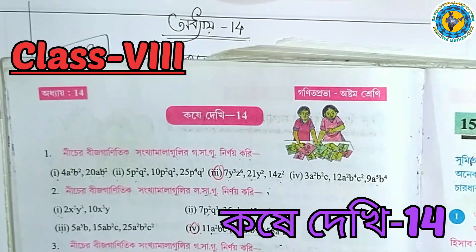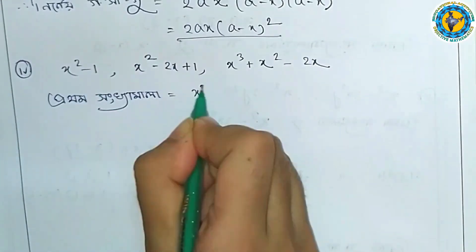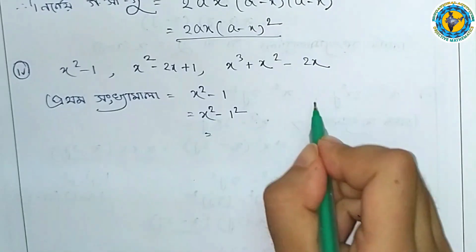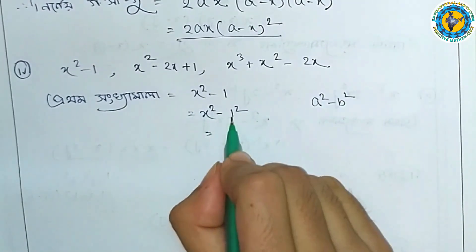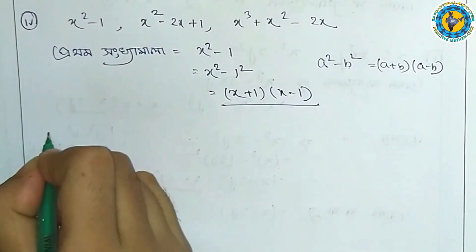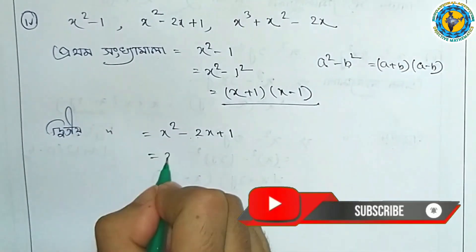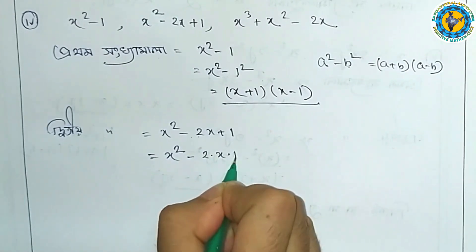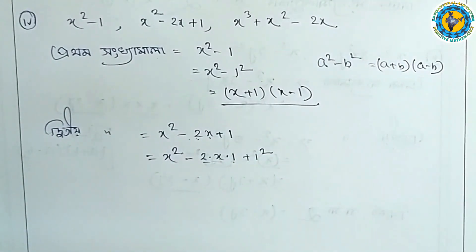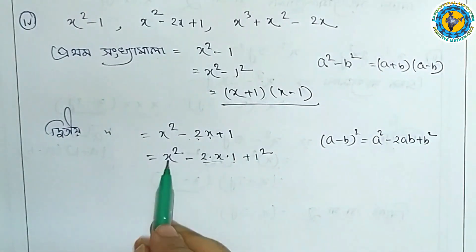Class A tier Method 2: x plus 1 into x minus 1. I will write the same thing: x squared minus 2x plus 1, which is x squared minus 2 into x into 1. I will write the same thing: 2 into x into 1 is equal to 2x, plus 1 squared equals 1. This follows the a minus b whole square formula: a squared minus 2ab plus b squared.